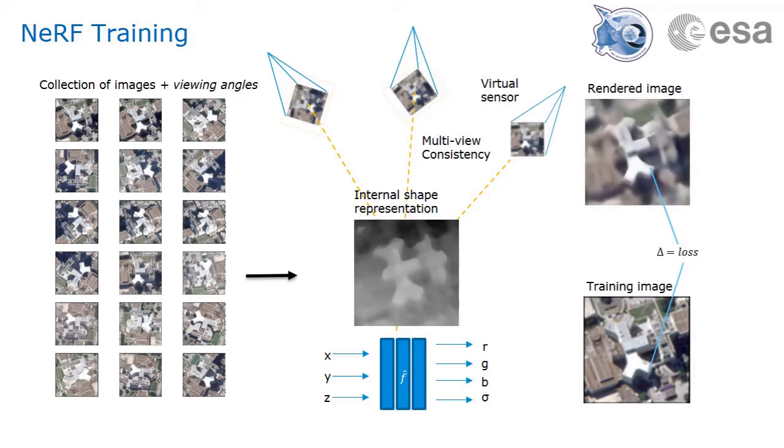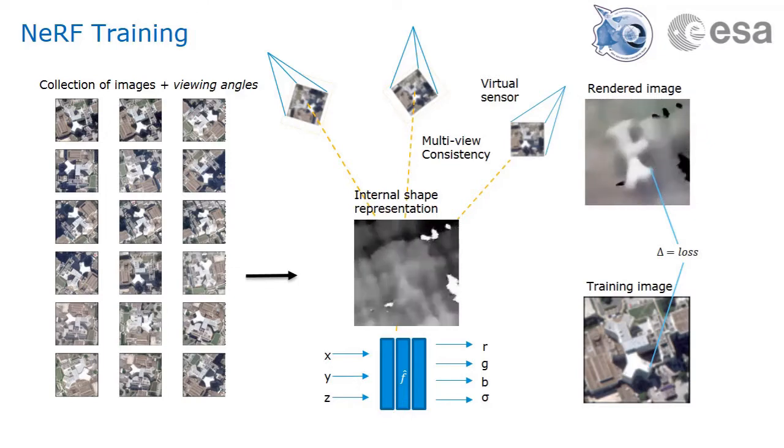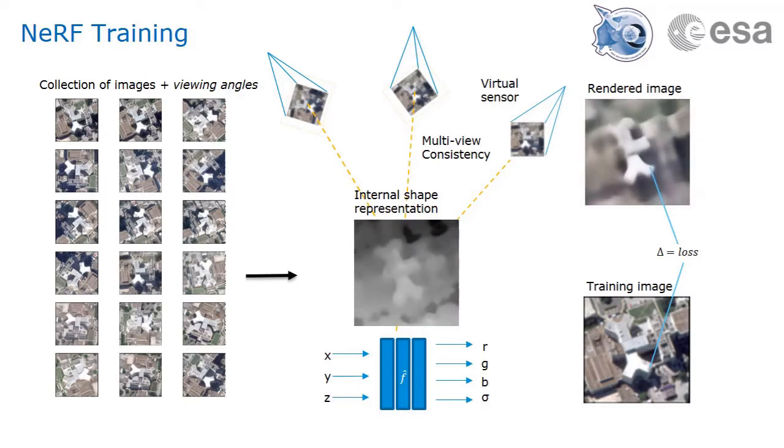Starting with random initial shapes and colors, the network learns a representation that is consistent with the captured scene after several thousands of iterations through the training data.